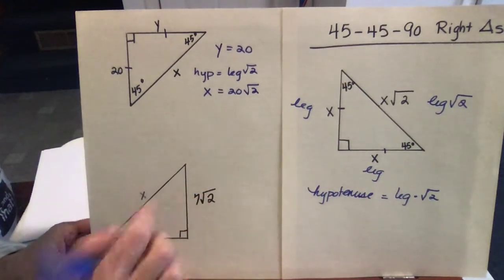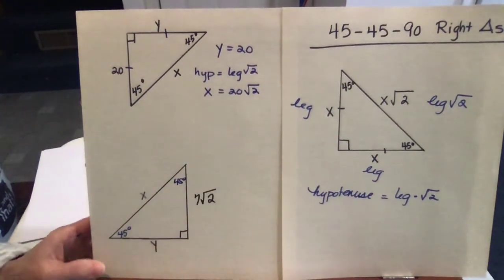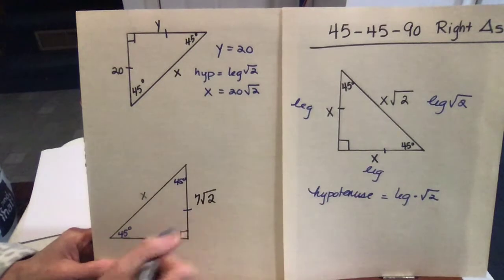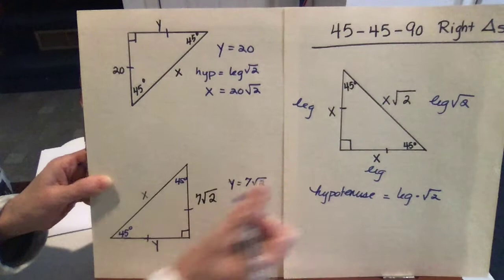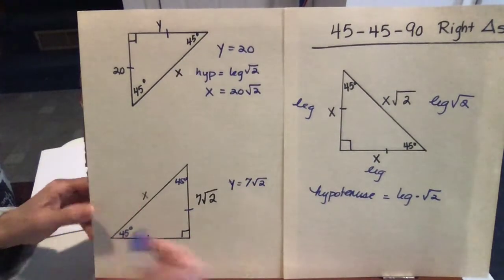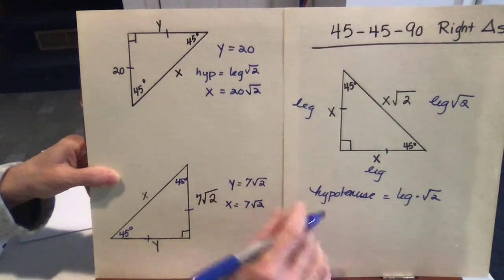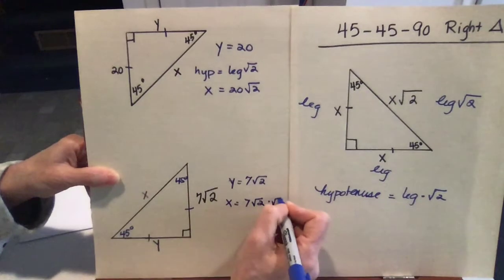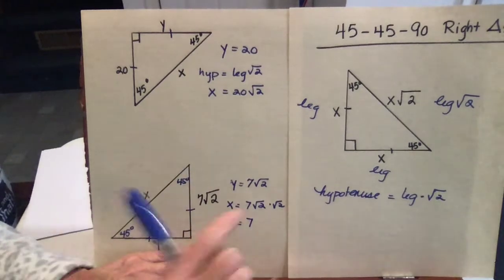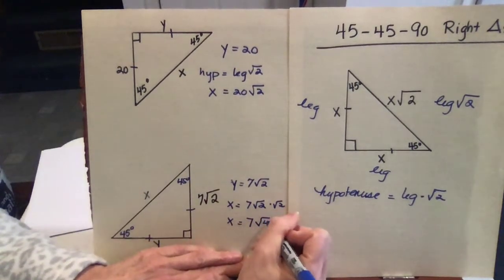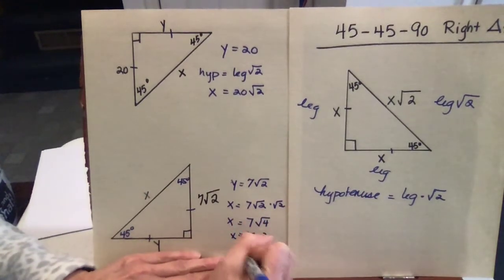In the second problem, we have a 45-45-90 right triangle. Y is the same as 7 root 2, because both legs are equal. The hypotenuse is X, and X equals the leg, which is 7 root 2, times root 2. If you want to do this the long way, we keep our 7 outside the radical. Root 2 times root 2 is root 4, and the square root of 4 is 2, so it becomes 7 times 2, meaning X equals 14.